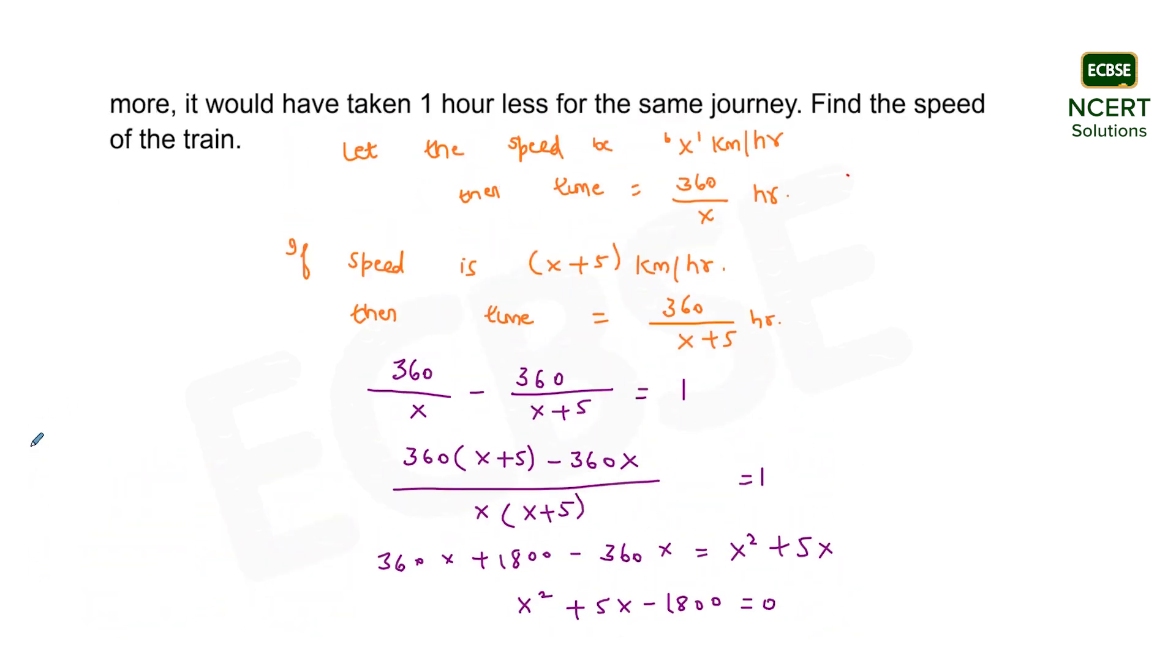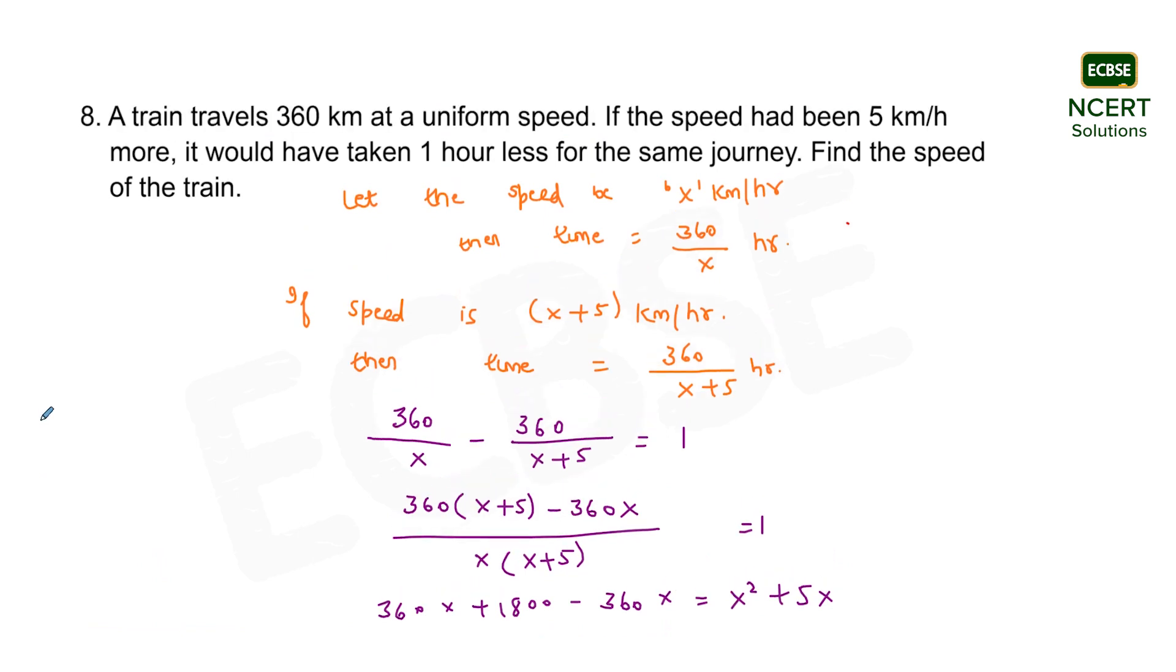So this will be the speed of the train which, on increasing the speed by 5, reduces the time by 1 hour. I hope this question is clear to all of you.